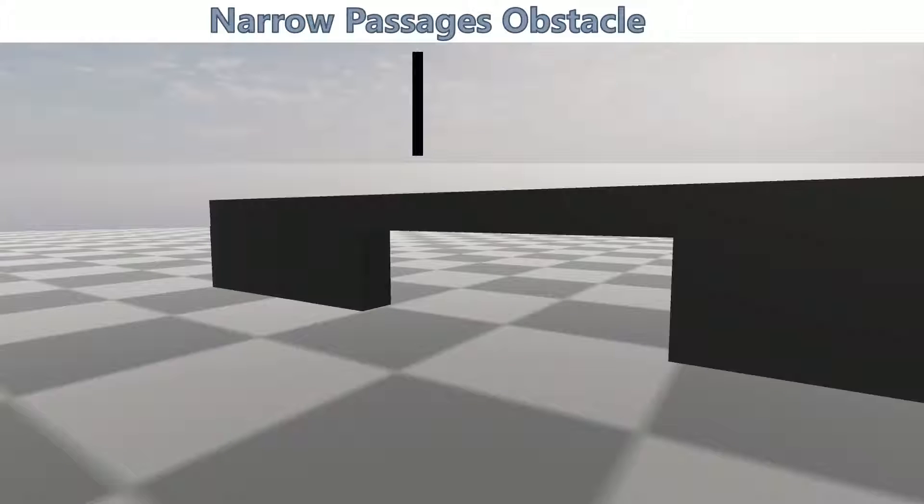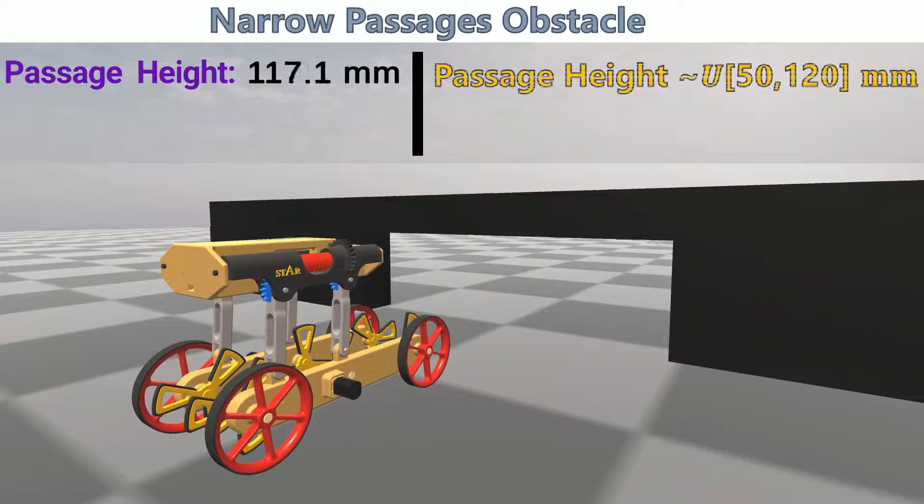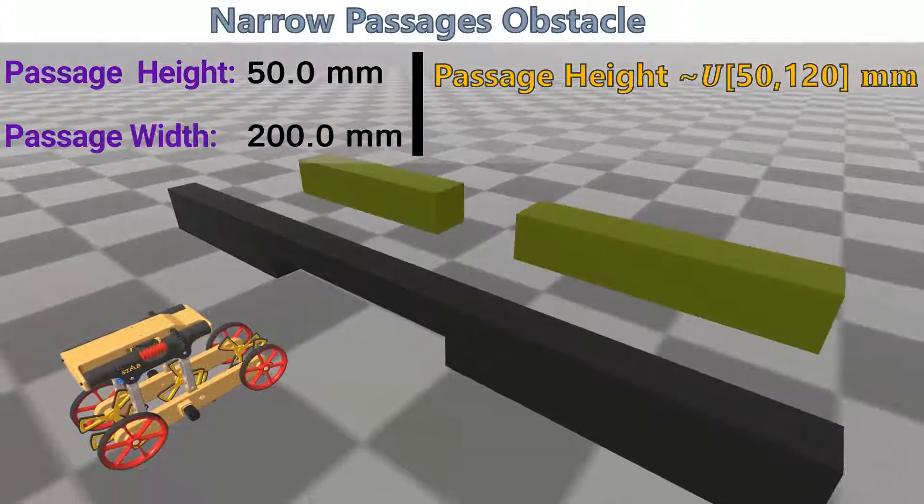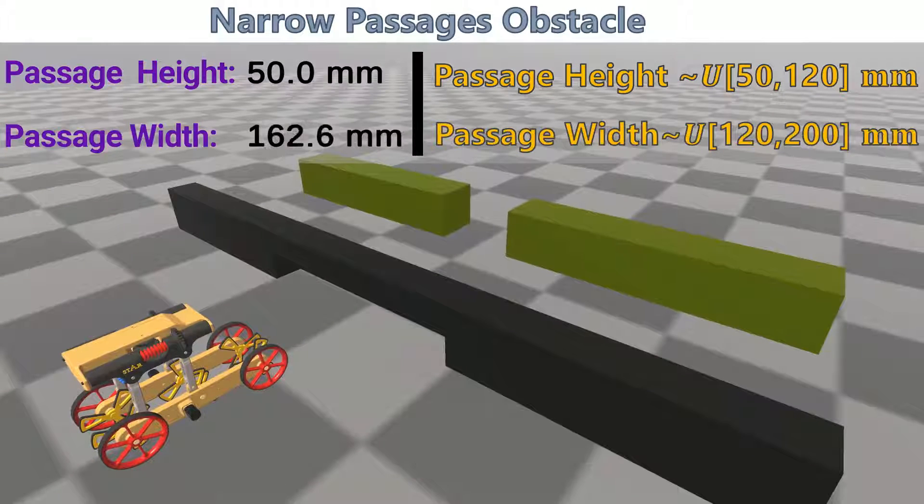To verify the obtained results, we compared the different reward functions in an additional obstacle environment. This environment includes a two-stage narrow passages obstacle.